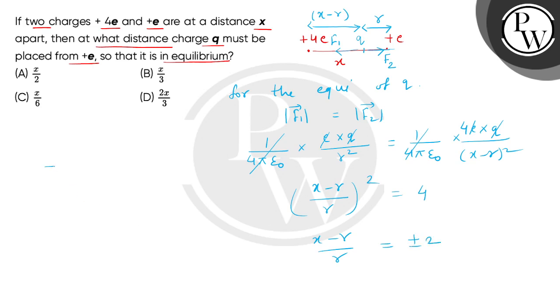So here we can take plus and minus. x minus r equals 2r, so x equals 3r. From here we will find the value r equals x/3.